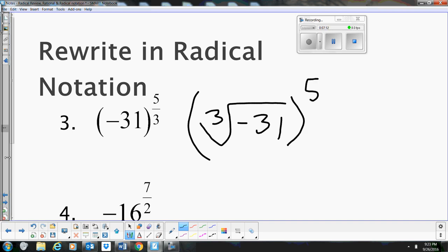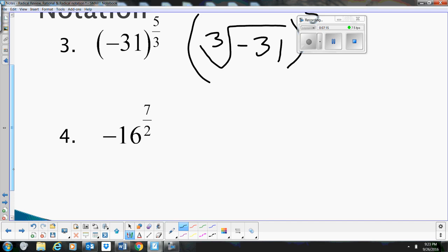This becomes the cube root of negative 31, quantity to the 5th power. And this next one is 16, negative 16 to the 7th power. Now that one's kind of tricky, because, I'm sorry, that negative, though, is not on the inside.